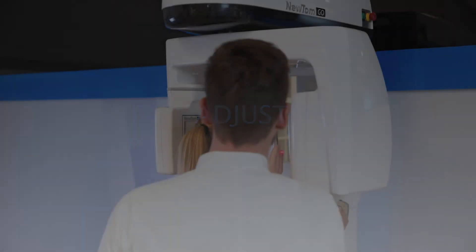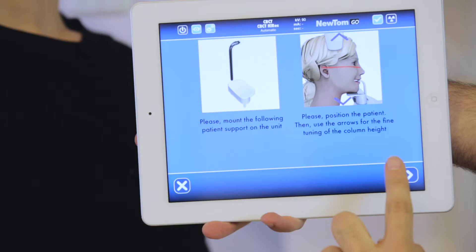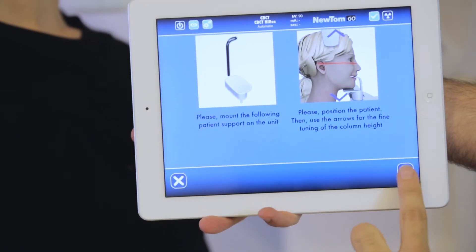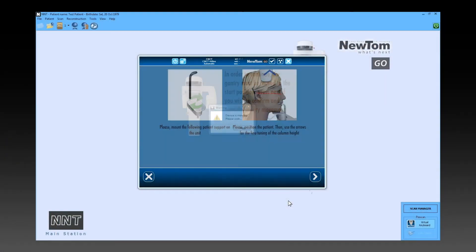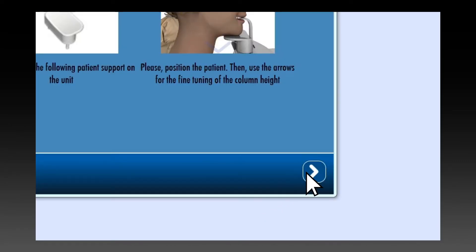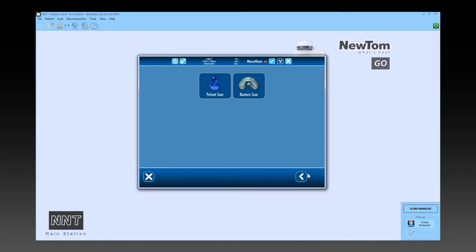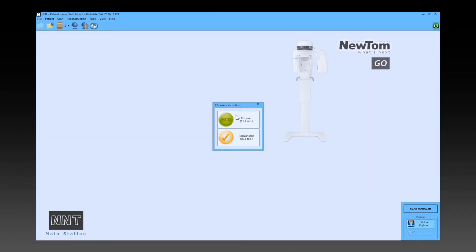Once the examination parameters have been set and the patient is positioned, the dentist can press next on the virtual console and then switch to the PC for the procedure follow-up. From the NNT software, the dentist selects the patient scan protocol and the scanning mode, eco or regular.